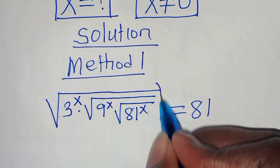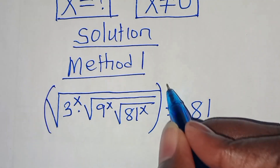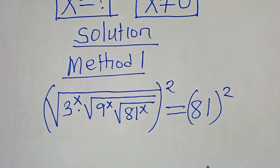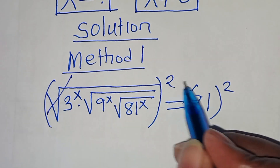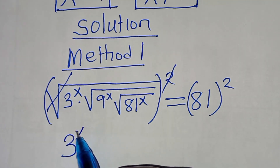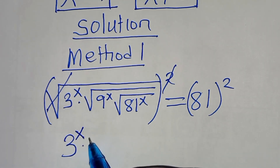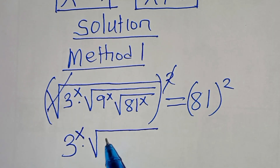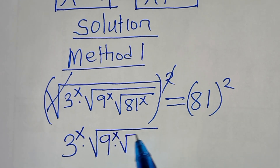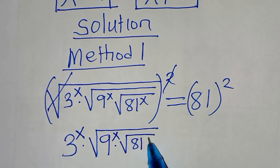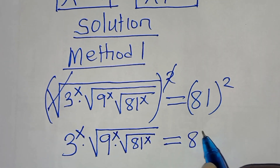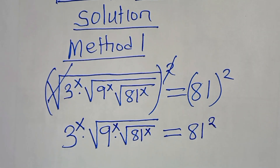The first step is to square both sides so that we can eliminate the first square root sign. This implies that we have 3 to the power of x, multiplied by the square root of 9 to the power of x, multiplied by the square root of 81 to the power of x, equal to 81 raised to the power of 2.